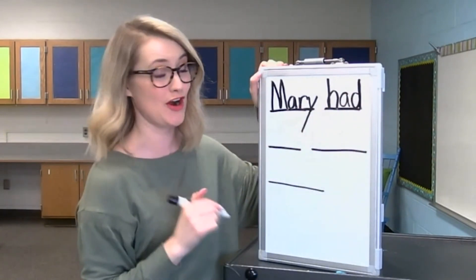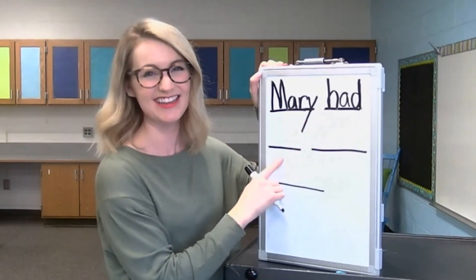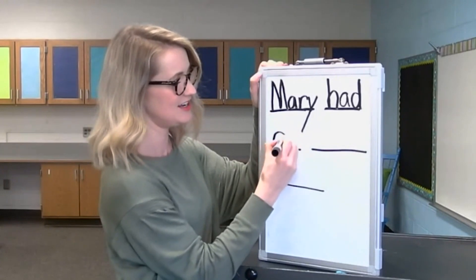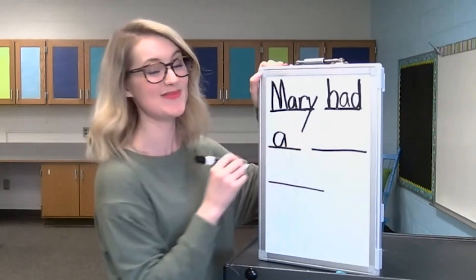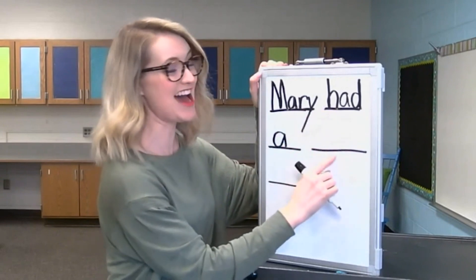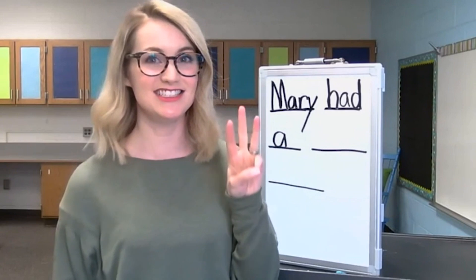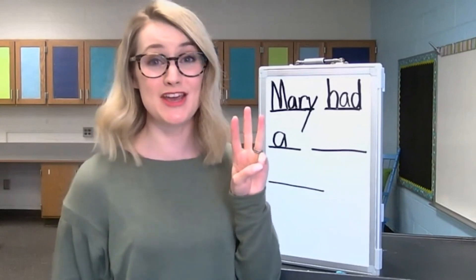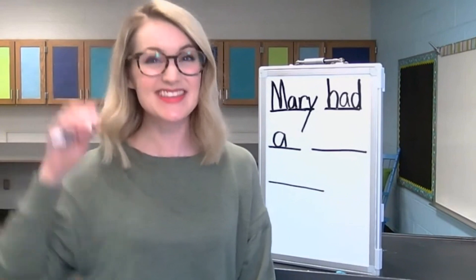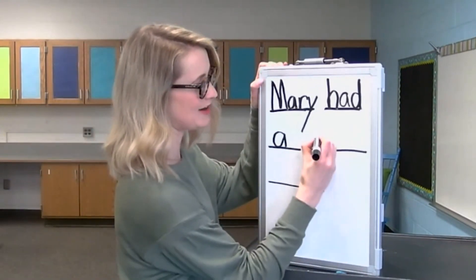Let's read what we have so far: Mary had a. The word a is just a plain A — let's write it. Make a C, close it, and go down. Let's read what we have: Mary had a pet. Let's stretch out that word: P-e-t. What sound do you hear at the beginning of the word pet? Yes, a P. Start in the middle, slide down, back up, and around.